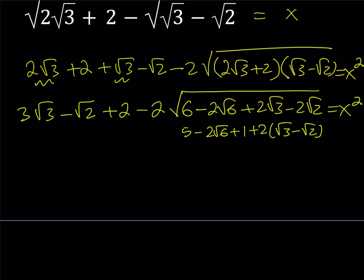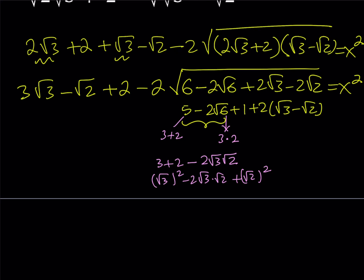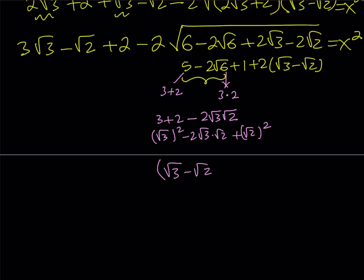So what's so special about 5 minus 2√6? If you're dealing with radicals, you should know this. The number 5 can be written as 3 + 2, and 6 can be written as 3 × 2. So we have two numbers whose product is 6 and whose sum is 5. That means I can write 5 minus 2√6 as (3 + 2) minus 2 times √3 times √2, or equivalently as (√3)² minus 2·√3·√2 plus (√2)². This is a perfect square — with radicals! So 5 minus 2√6 is actually (√3 minus √2) squared. If you expand that, you'll get the same expression.